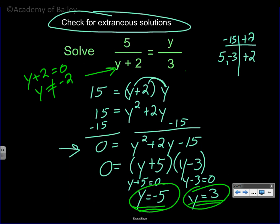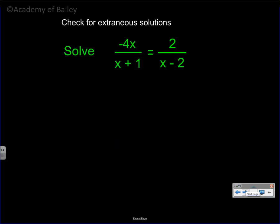Don't forget: if there was a variable on the bottom of the other fraction, you would have to figure out what that variable could not be also. But in this case, we just had a 3 down there. Here's the next problem — it's solved exactly the same way. Go ahead and try to work this out, then check your solution with mine at the end.